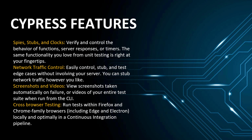Cypress supports cross-browser testing — you can run tests on Firefox, Chrome, and the Chrome family which includes Edge and Electron. Electron is basically a headless execution mode. In Selenium you have PhantomJS or the headless HtmlUnit driver; in Cypress, Electron is the headless option to execute scripts without opening the browser. This is very helpful for continuous integration pipelines where you want to optimize execution without launching a UI.